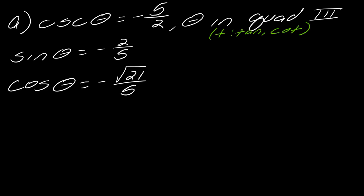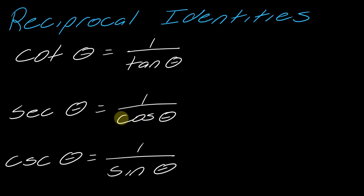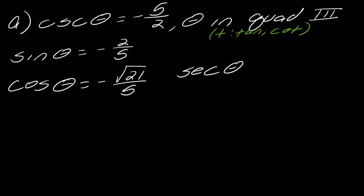Now that I know the value of cosine of theta, I also get secant for free using a reciprocal identity. The value of secant of theta is 1 over cosine of theta, so I just take the reciprocal to get negative 5 over the square root of 21. I need to rationalize, so this becomes negative 5 square root of 21 over 21. That's the value of secant theta.